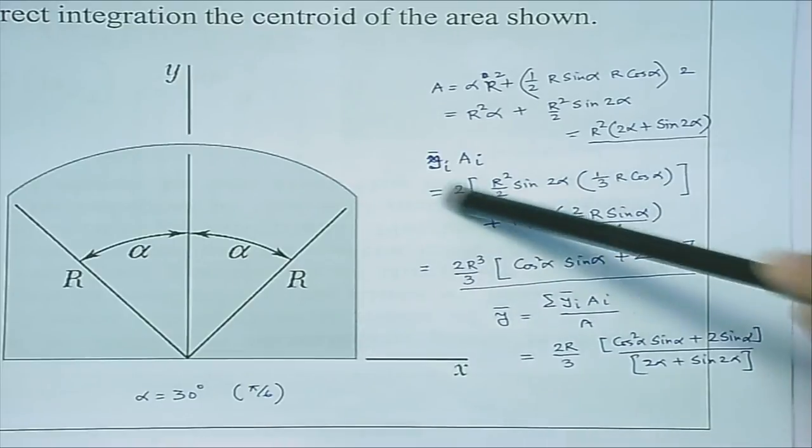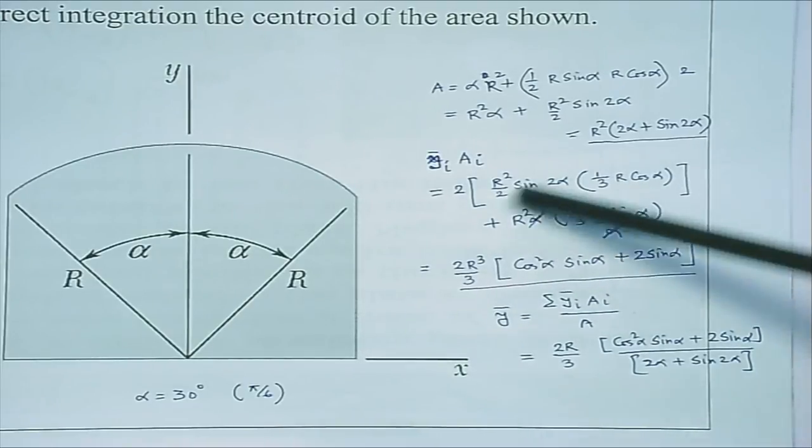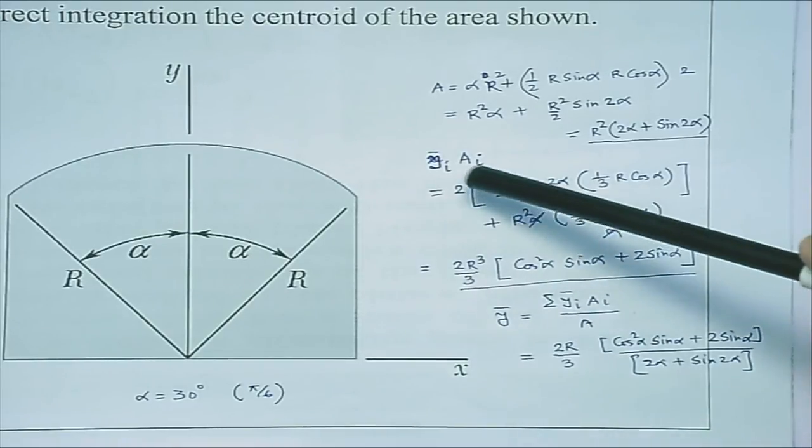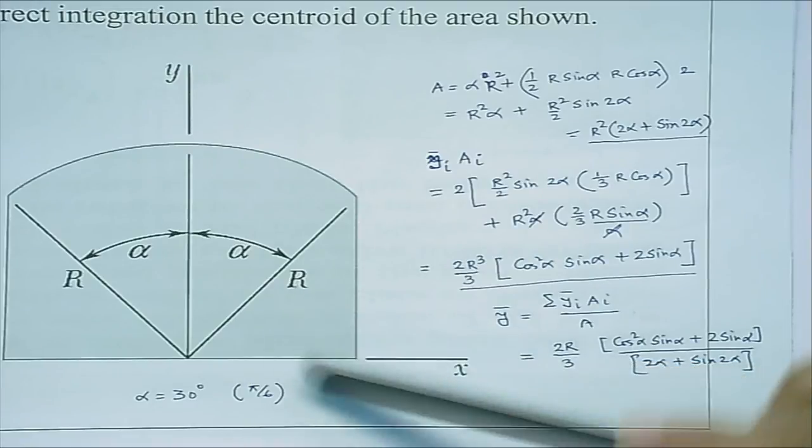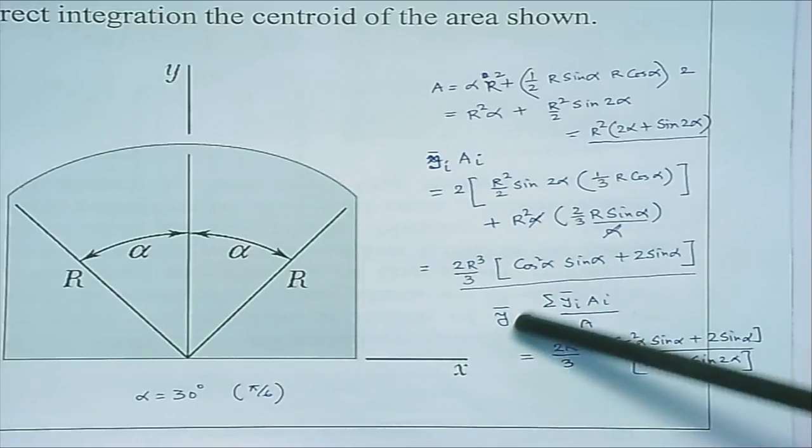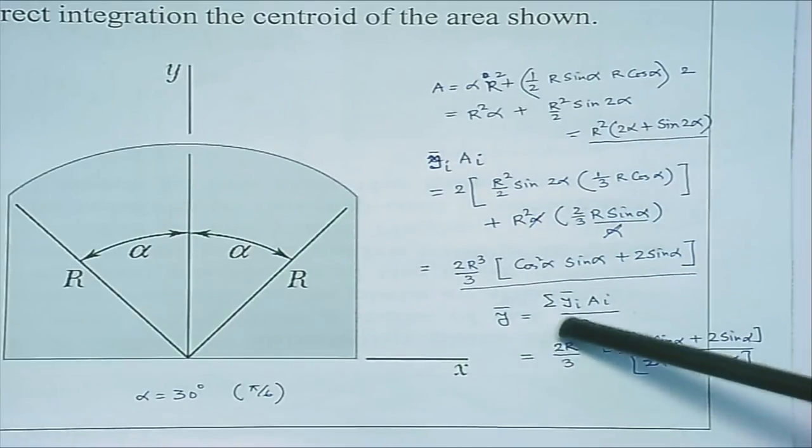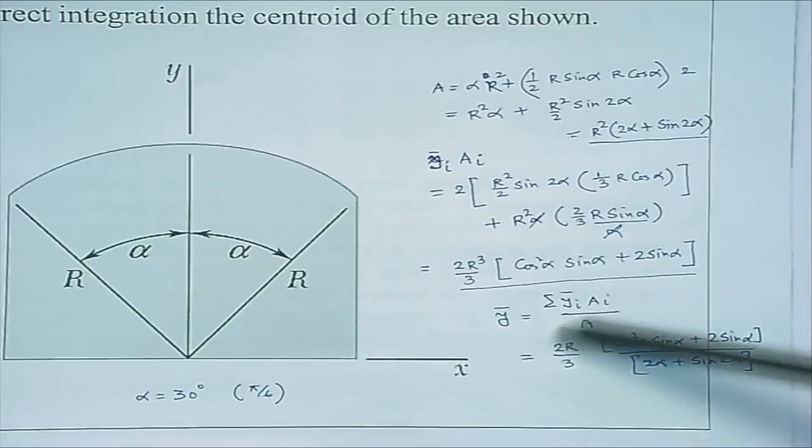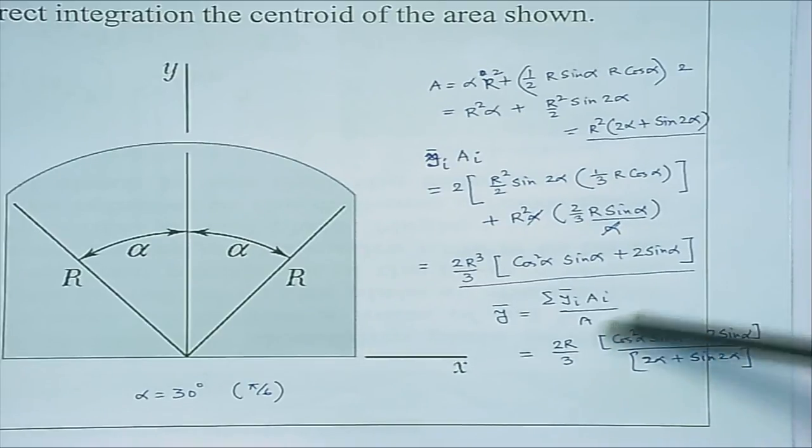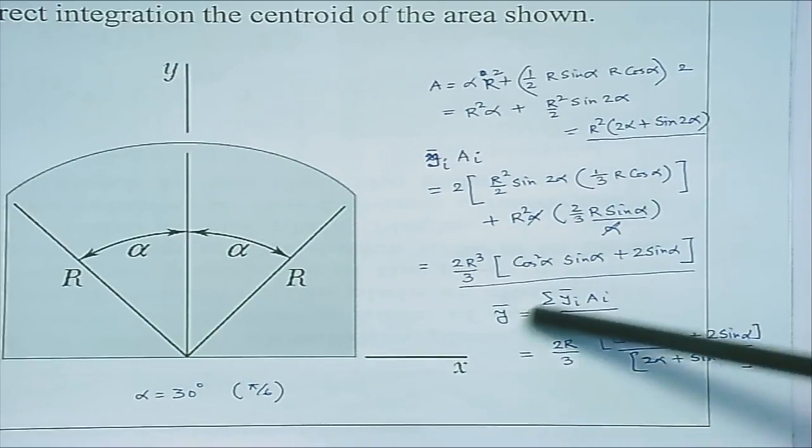This part is from the triangle, this part is from the circular sector. These are giving me the first moment of area about the x axis. Finally, what we have basically is this divided by that. You can clearly see we are getting this result back. This result is what we also got from the direct integration.